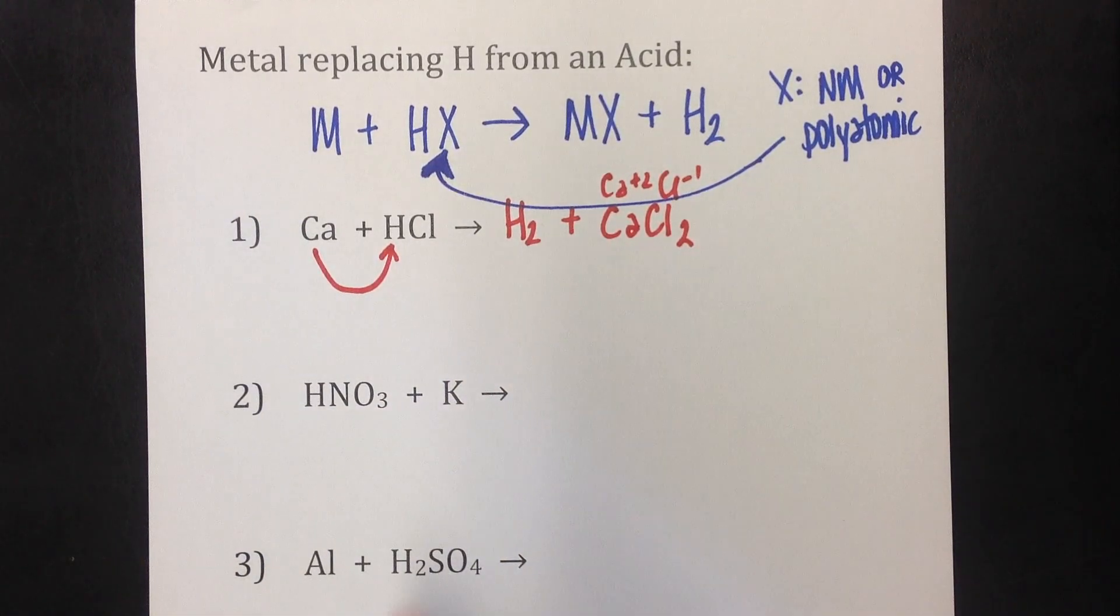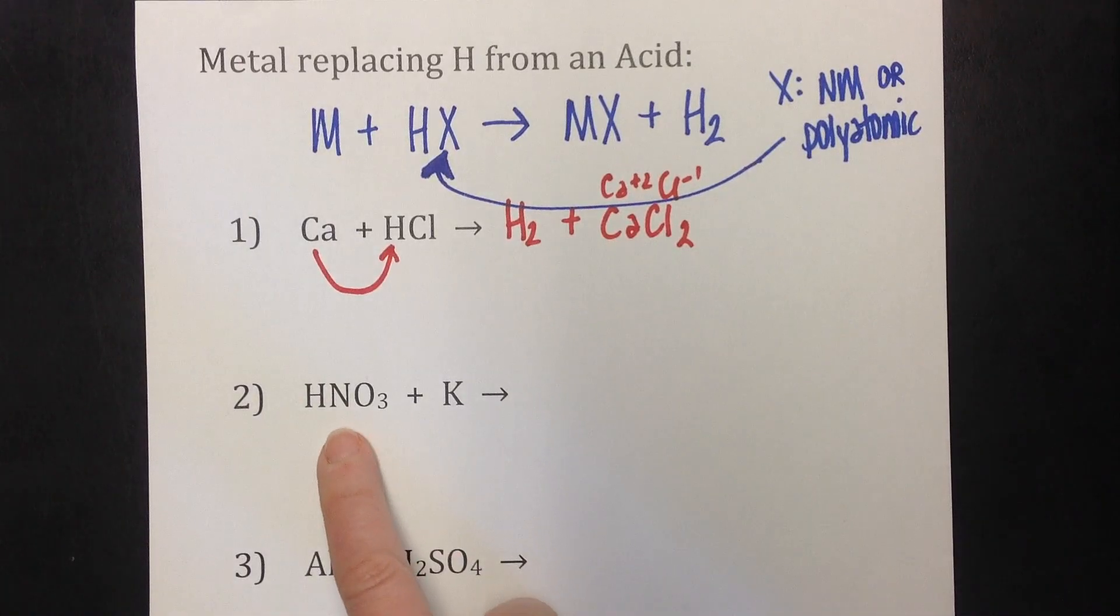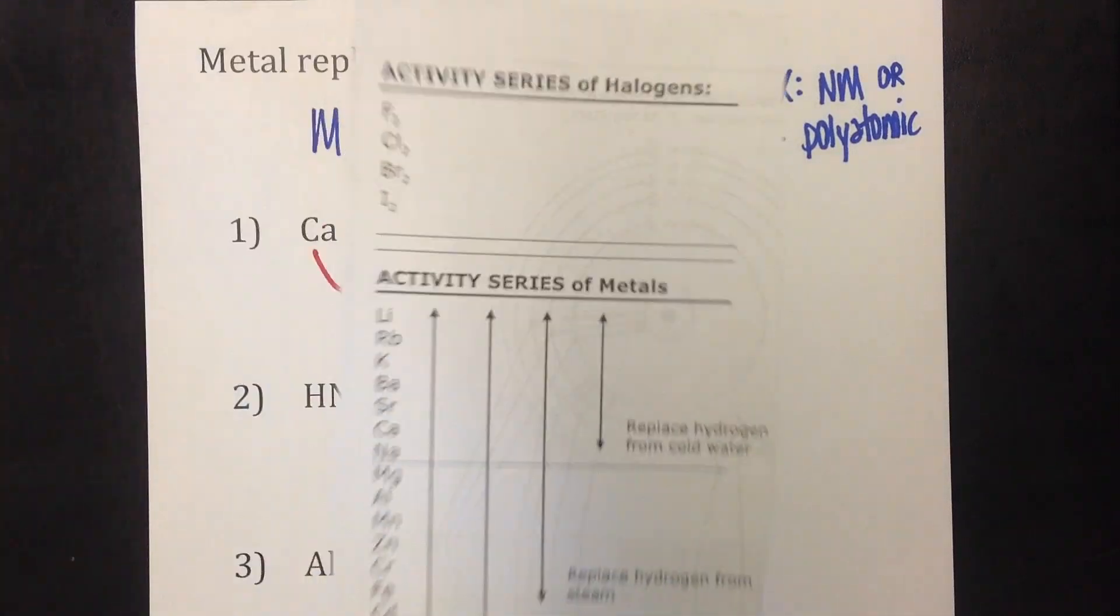So let's look at number two. We have nitric acid and potassium metal. So potassium metal is like our third wheel. And what it wants to do is it wants to kick the hydrogen out of this acid. So we're going to look at our list.